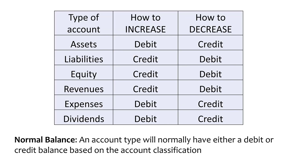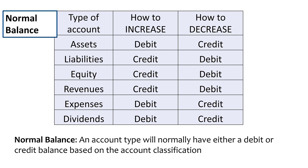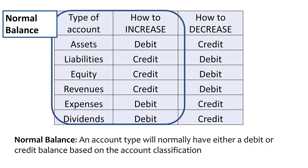Just a word about normal balances. All accounts have a normal balance — that's what it would normally have, a debit or credit balance based on the account classification. What you have on screen is a debit-credit table. To increase an asset you would debit it, to decrease an asset you would credit it. Liabilities you credit to increase, debit to decrease. Normal balances are whatever it takes to increase that account. So assets have a normal debit balance, liabilities have a normal credit balance, and so on.